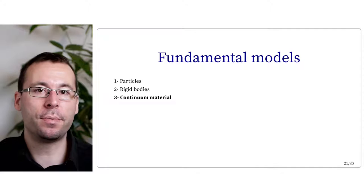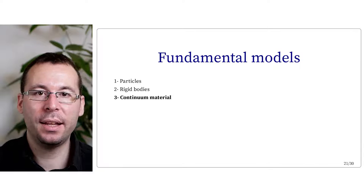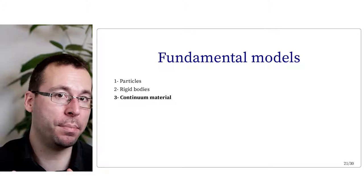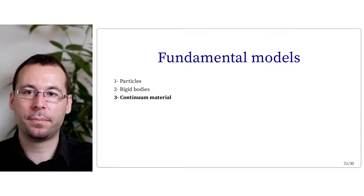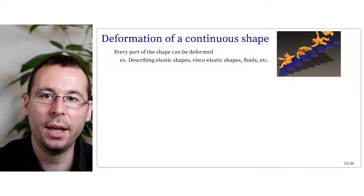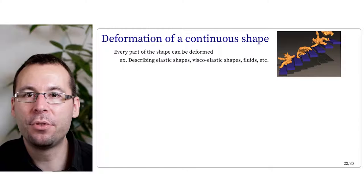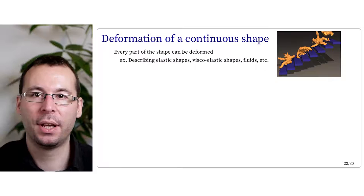We are reaching our last model, which is the continuous material. This model allows representing materials that deform, and it's the most accurate representation of real-world materials. But on the other hand, it's the most complex to deal with. The interest of this model is that every part of the shape can be deformed and we have local properties defined continuously on it. It's adapted to model accurately elastic and viscoelastic shapes and fluids. There are two main representations of the deforming object.